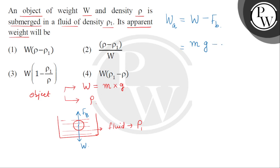And buoyant force होगा the mass of the liquid displaced by this object multiplied by G. So यहाँ mass of the solid object को हम क्या लिख सकते हैं? Its density multiplied by its volume.